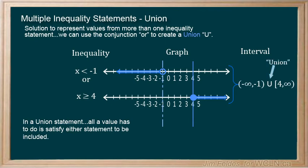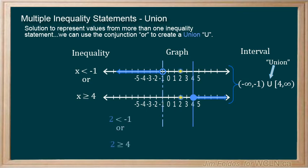Notice values between the two endpoints don't work. 2, for example, is neither less than negative 1 nor greater than 4. Negative 1 also doesn't work. 4 is okay as it's true in the second statement.